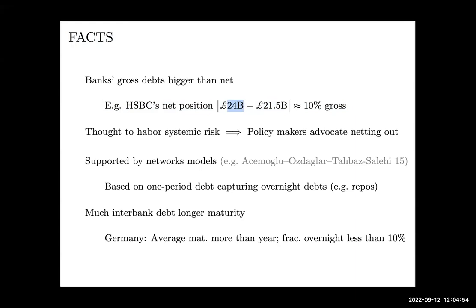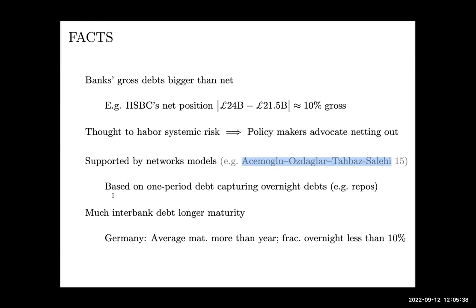These gross positions are a lot bigger than net positions, and that's often thought to harbor systemic risk through domino effects of defaults. As a result, a number of policymakers advocate netting these positions out — replacing offsetting contracts with a single contract equaling the net position. That policy prescription is supported by many network models, including a paper by Acemoglu, Ozdaglar, and Tahbaz-Salehi — which I'll refer to as AOT — which is a relevant benchmark. Most network models of debt are based on one-period debt, which is a good model for overnight debts like the repo market.